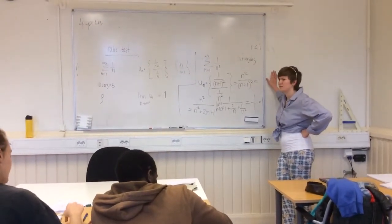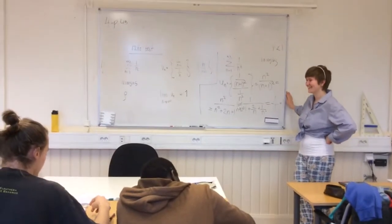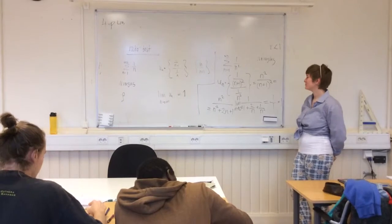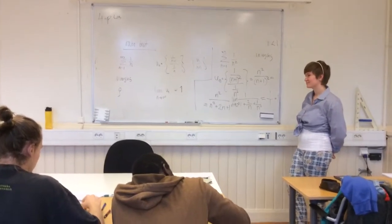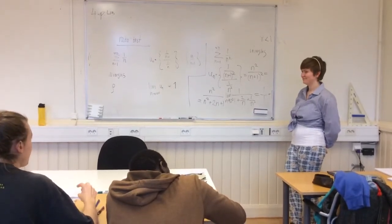We can say that for the series of 1 divided by n to the power of k, the ratio test will always be 1. If we use the ratio. Thank you.